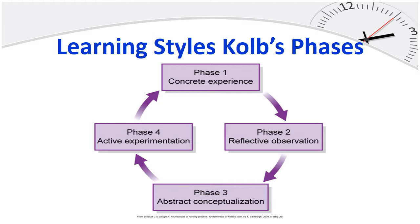One of the first things you can do in learning is to identify your learning style. There are many learning style surveys or instruments to assist you. Culp developed an experiential learning style inventory. Culp's cycle of learning occurs in phases: Phase 1, concrete experience; Phase 2, reflective observation; Phase 3, abstract conceptualization; Phase 4, active experimentation.